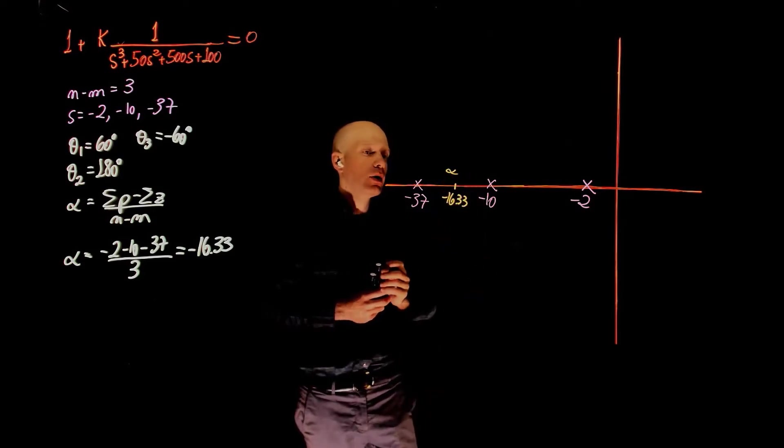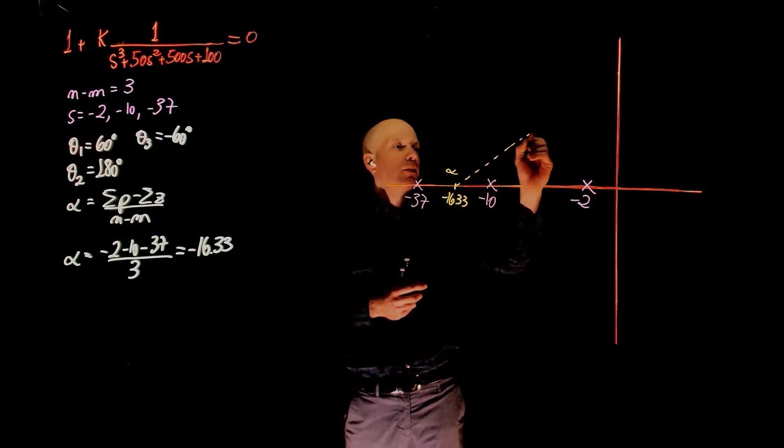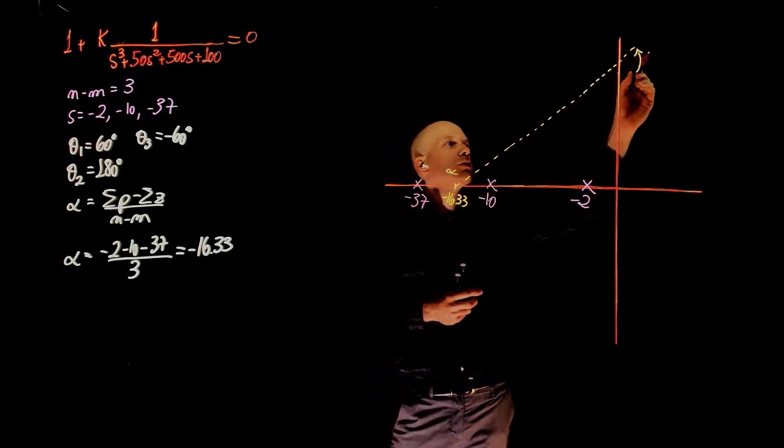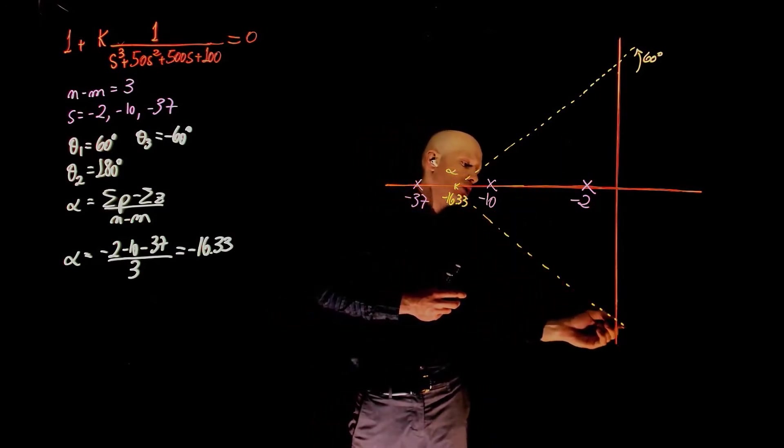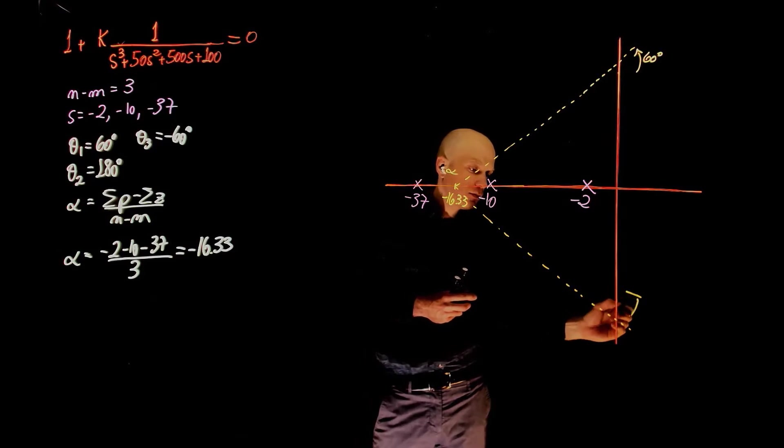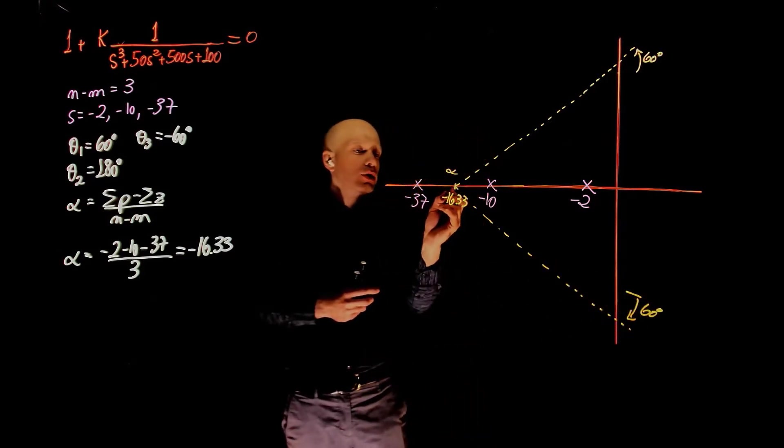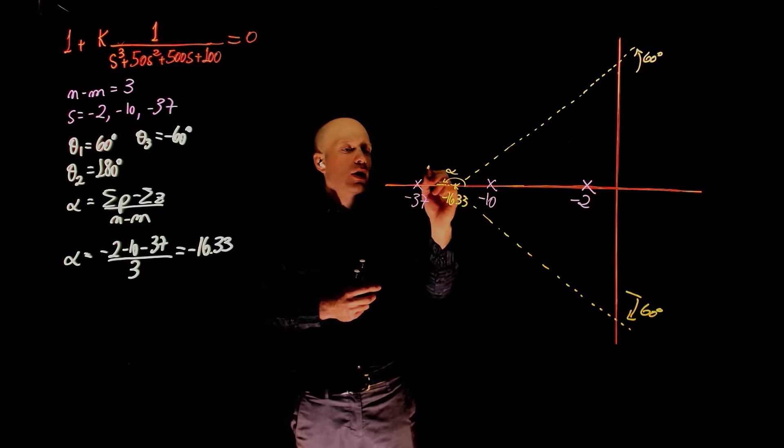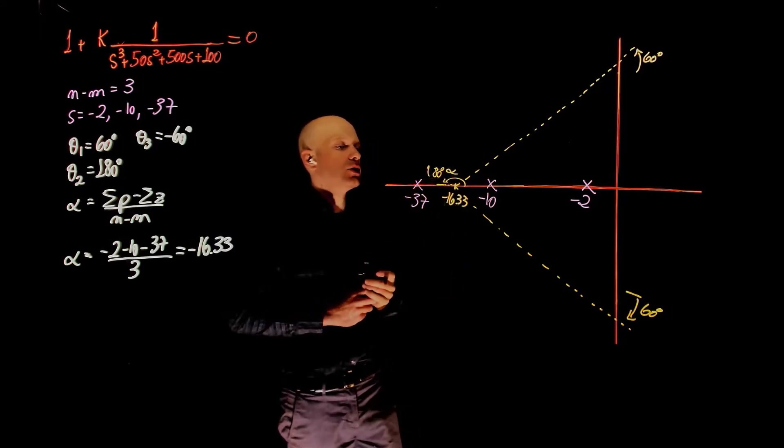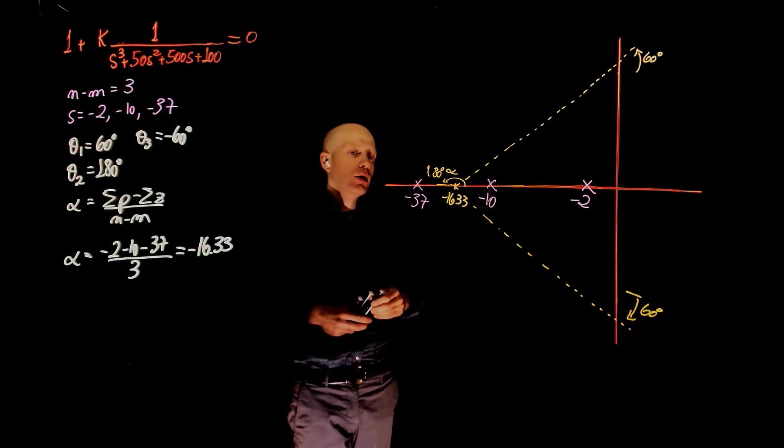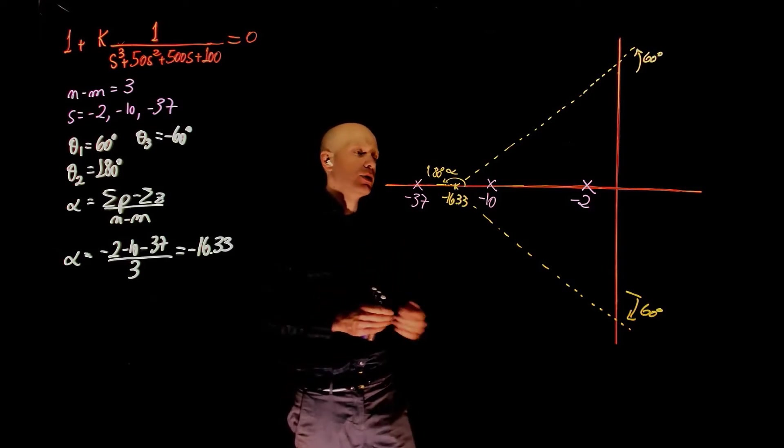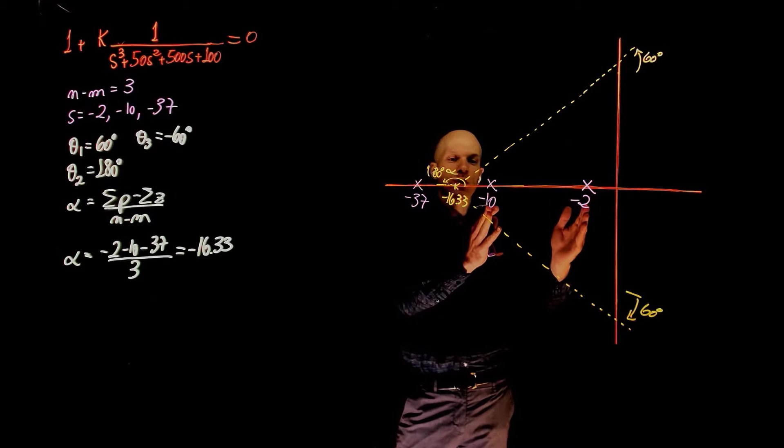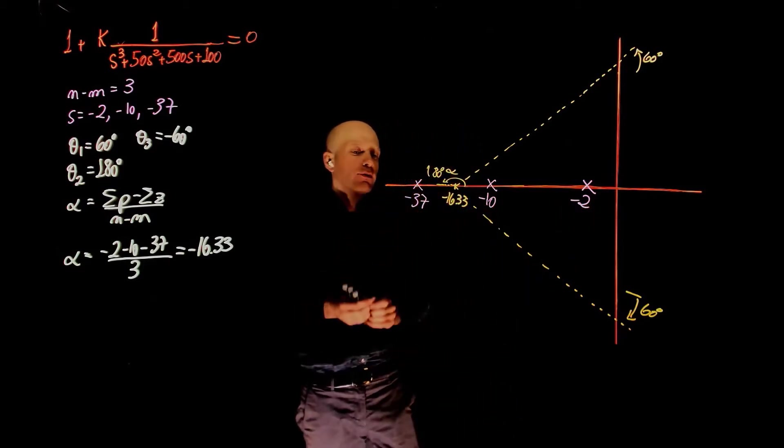One of the asymptotes go up at an angle of 60 degrees. The other one goes downwards at an angle of negative 60 degrees. And the third one goes to negative infinity, because theta has an angle of 180 degrees. Now where is the root locus? The root locus is always to the left of an odd number of poles and zeros, which means that in this case the root locus is between negative 2 and negative 10, and to the left of negative 37.